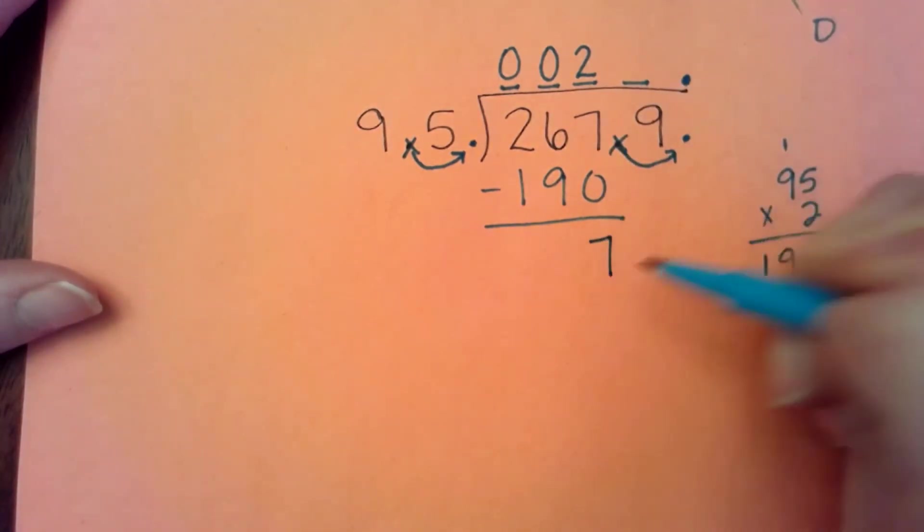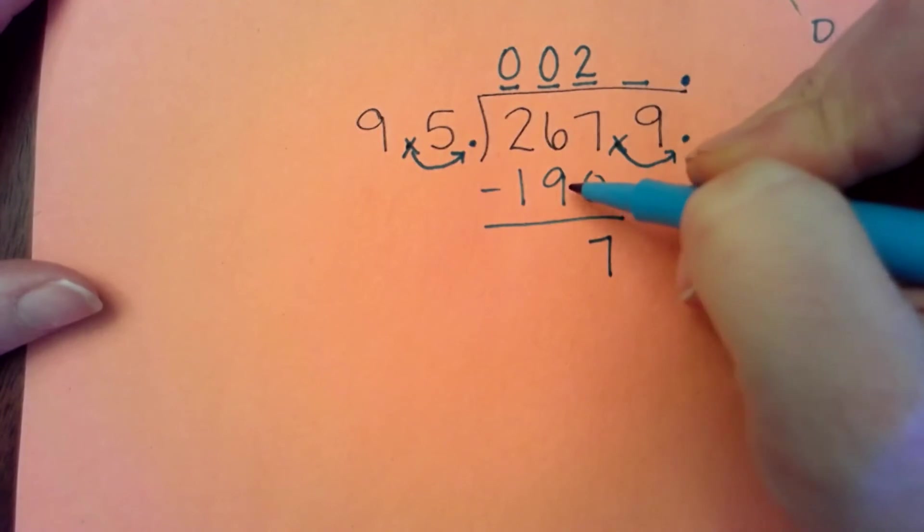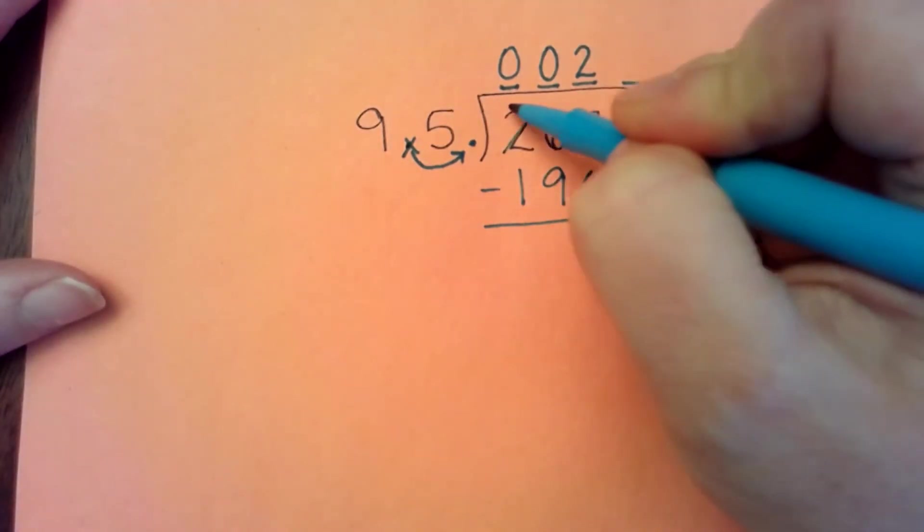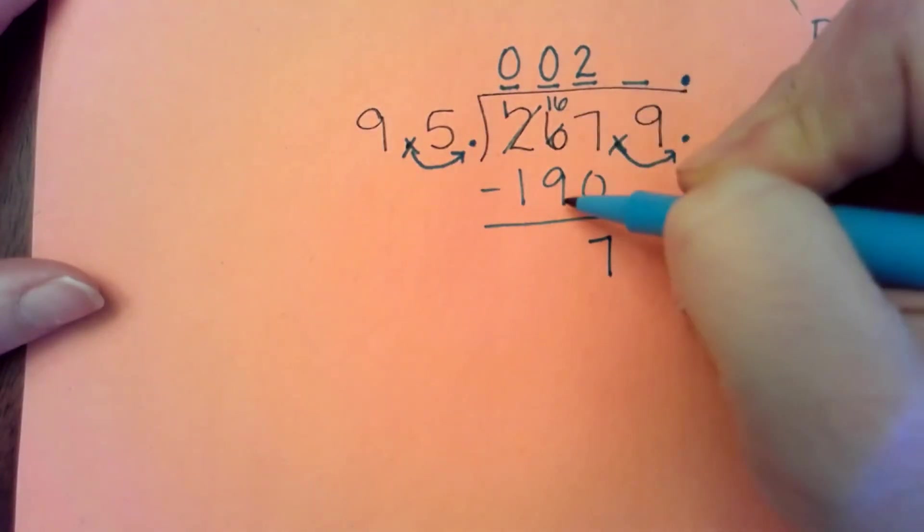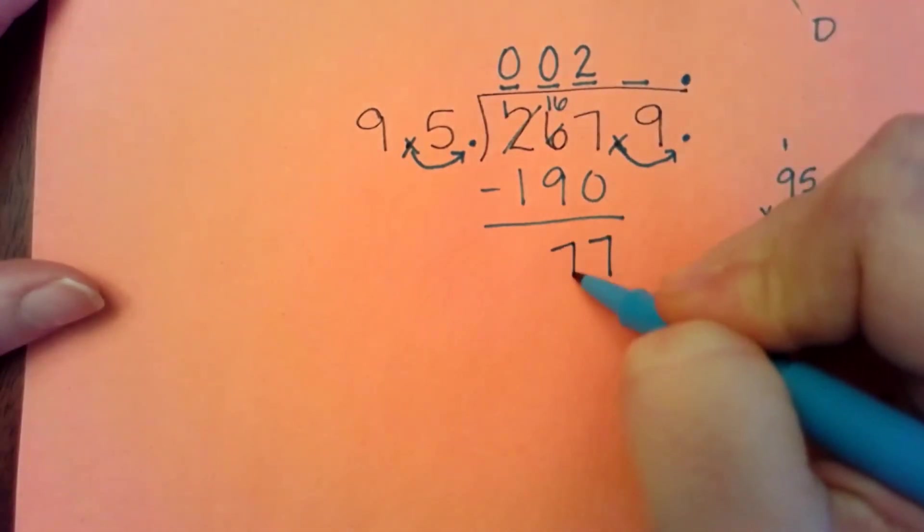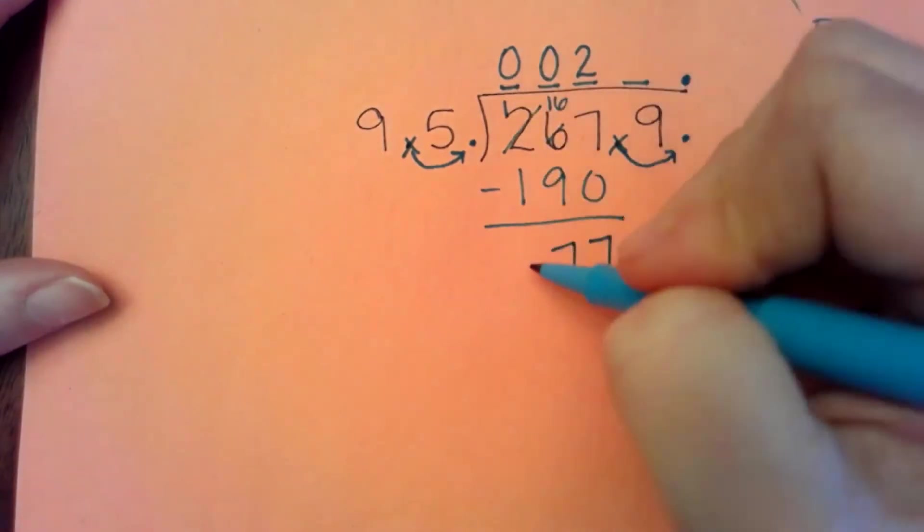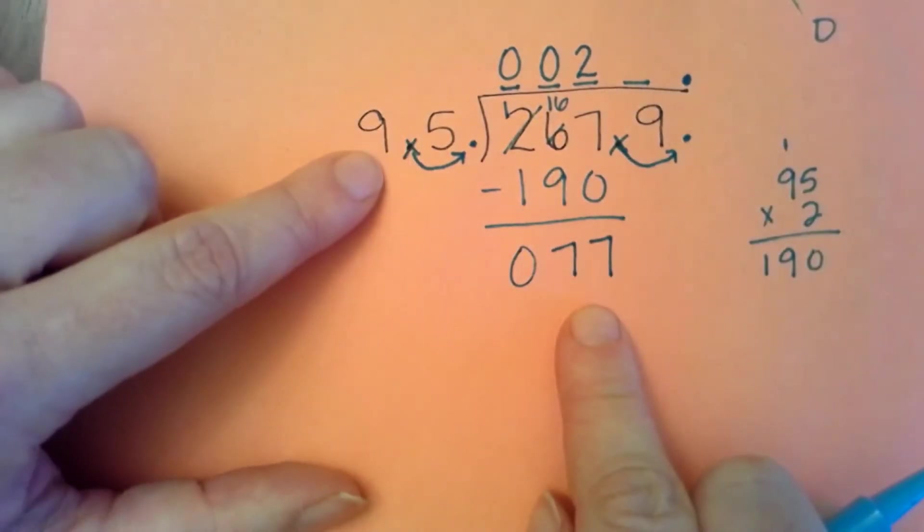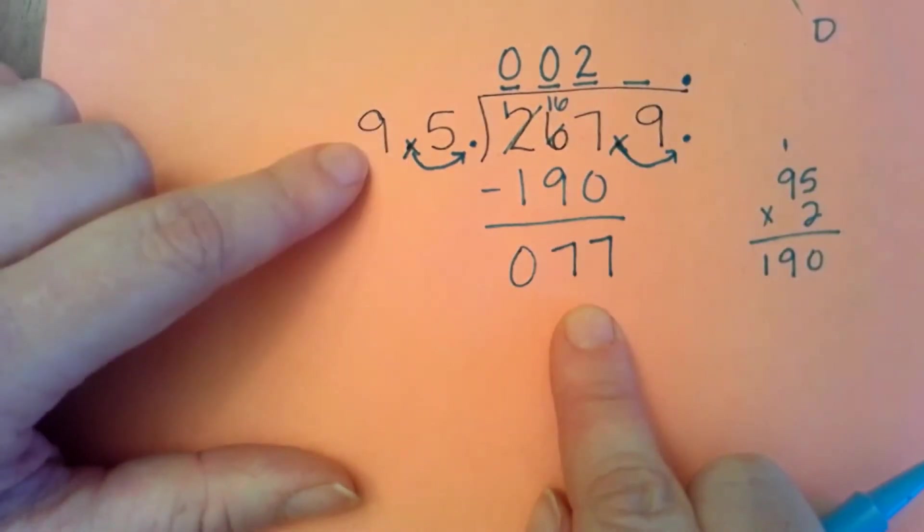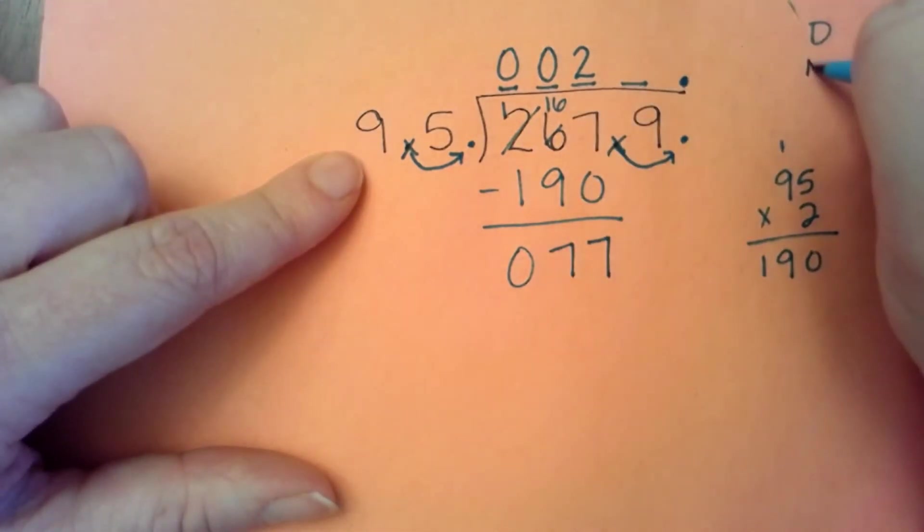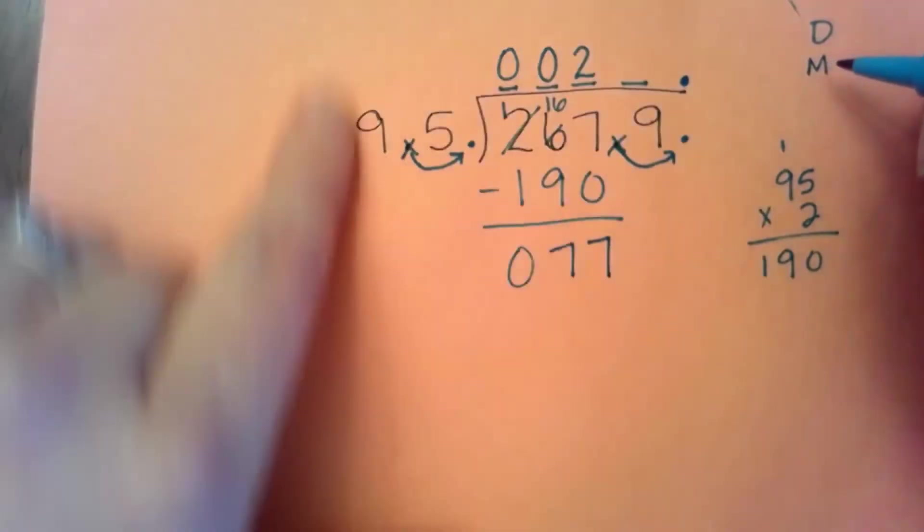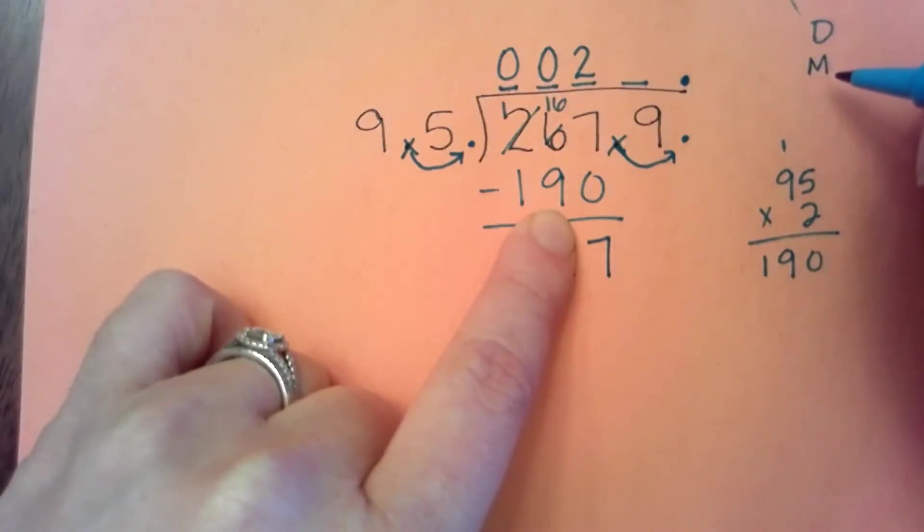I'm going to prove that right here by subtracting. And then I'll do that secret compare step to make sure that that was a good choice. 7 minus 0 is 7, 6 minus 9 can't do that and have anything positive. So I've got to borrow and regroup 16 minus 9. That works. And I get 7. 1 minus 1 is 0. Again, when I compare is 77 less than 95. Yes, it is. So that was a good choice.